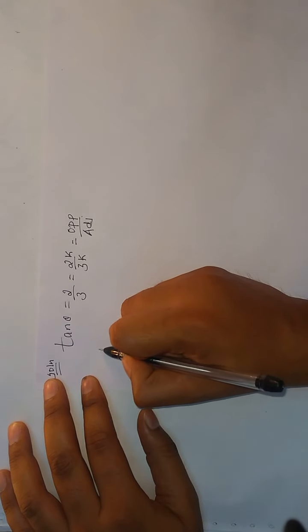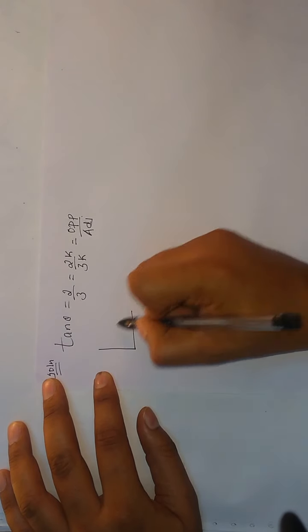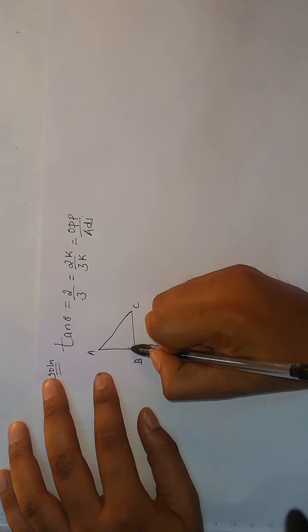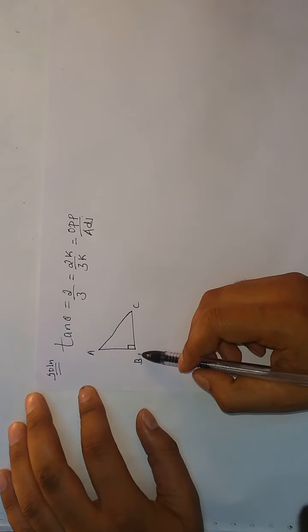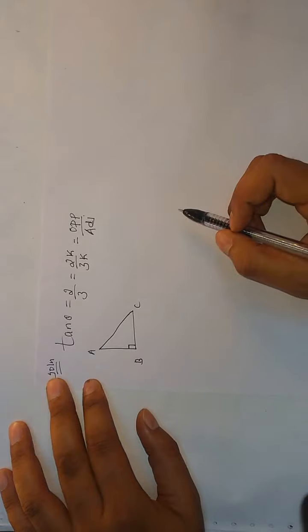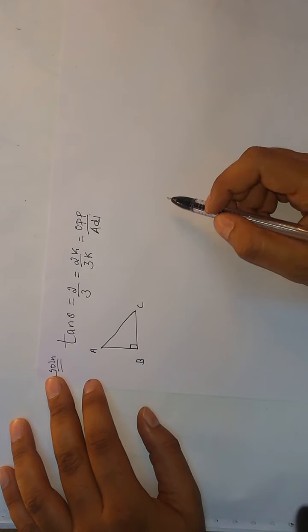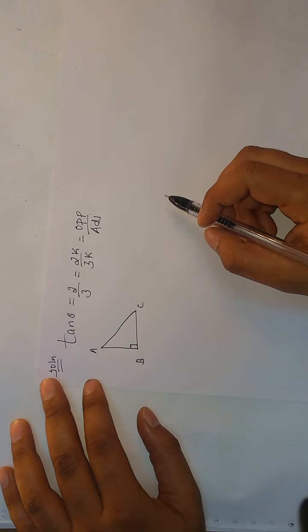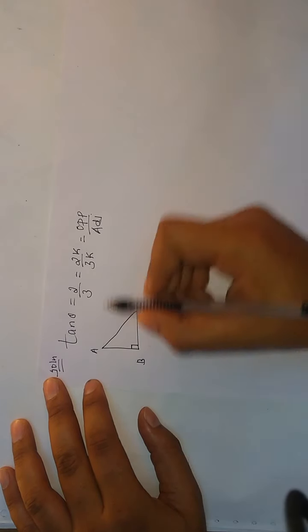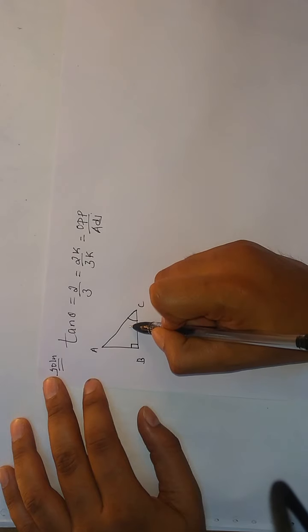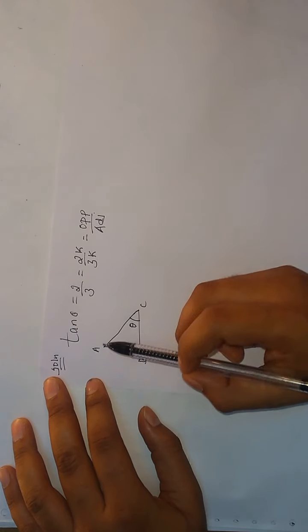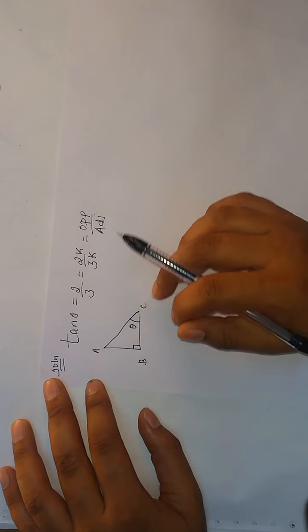So tan θ definition is opposite side by adjacent side. So draw one triangle ABC, a right triangle, which is right angle at B. Where I have to take θ, whether angle C is equal to θ or angle A equal to θ. So I will take angle C equal to θ. You can take angle A equal to θ as well, so that final answer is in the comment section.